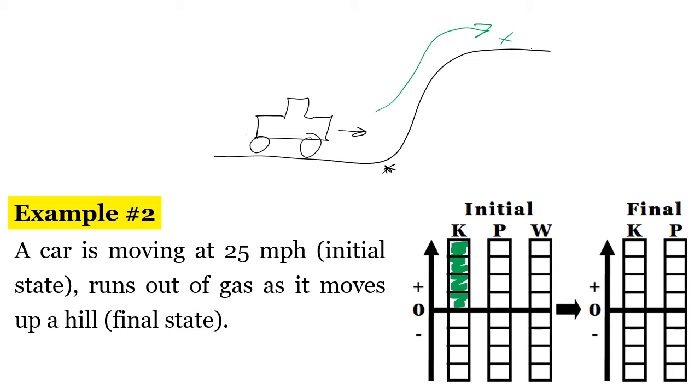So it ends up gaining height which we learned is potential energy. And that's it. So our kinetic energy in this case is being converted into potential energy. Kind of the opposite of the previous problem.